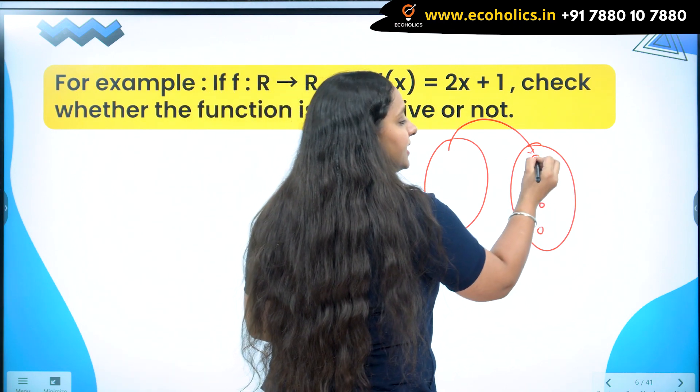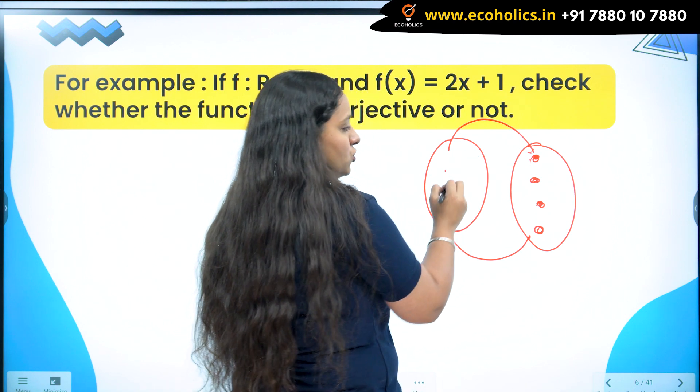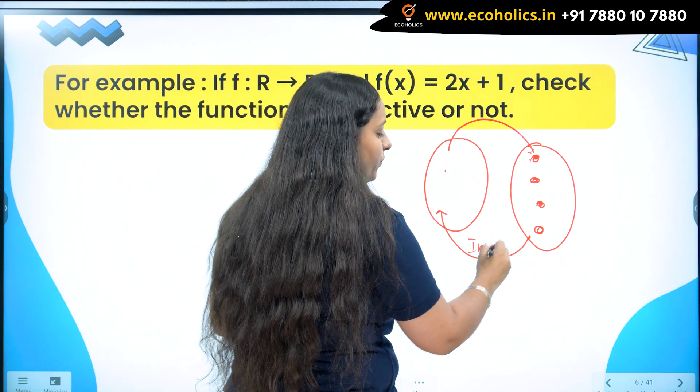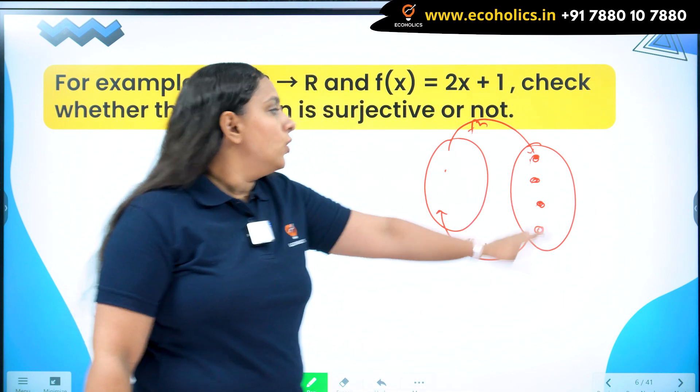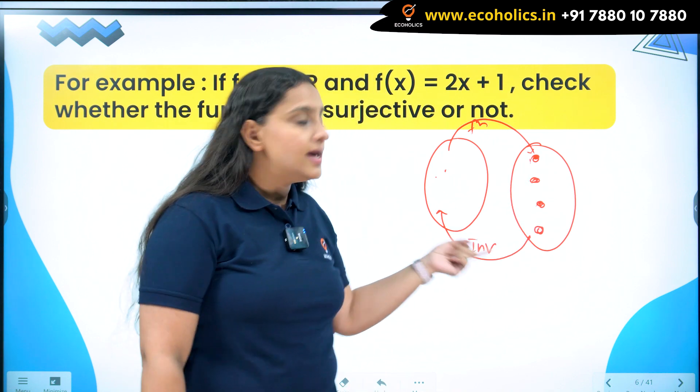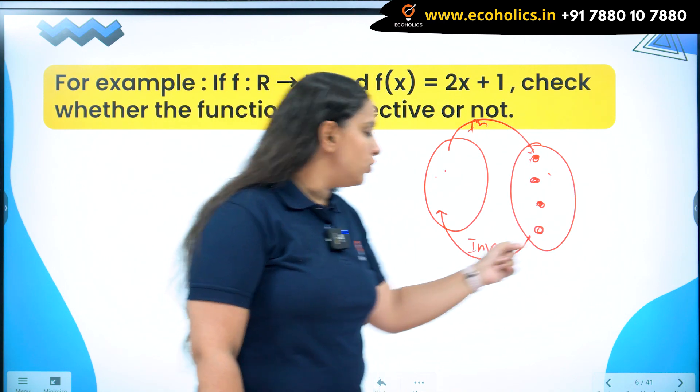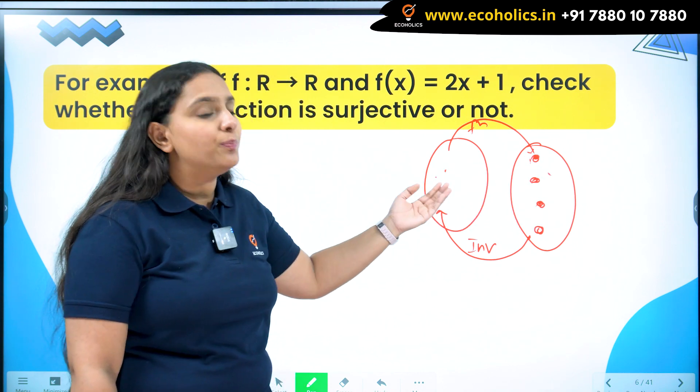In other words, this is the domain of my inverse function and this is range of inverse. Inverse will go from here to here and the simple function will go from here to here. Domain of the given function becomes range of inverse and range of function becomes domain of inverse.